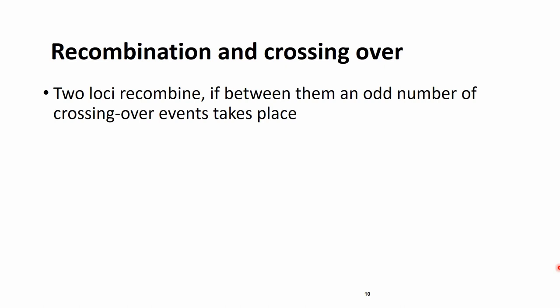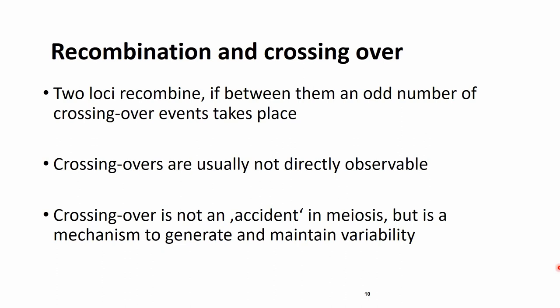Just a few short notes. Two loci recombine if between them an odd number of crossing overs takes place. These crossing overs are usually not observable, but we also need to underline that these crossing overs are not an accident in the meiosis, but really they are one of the key genetic mechanisms to generate and maintain variability.